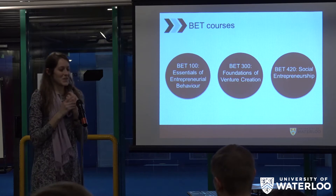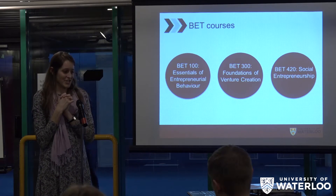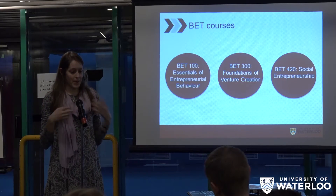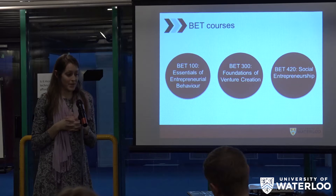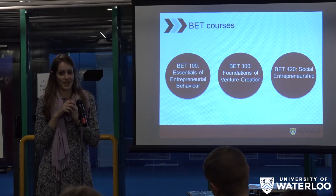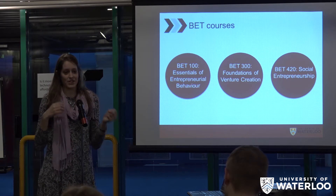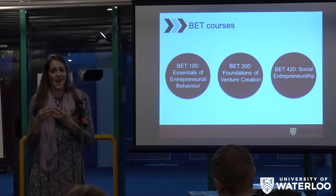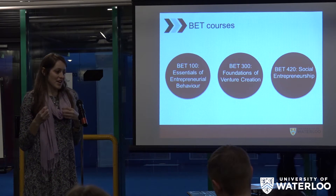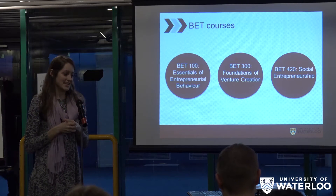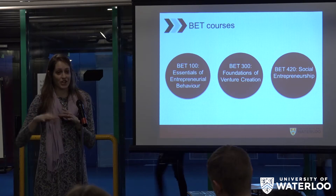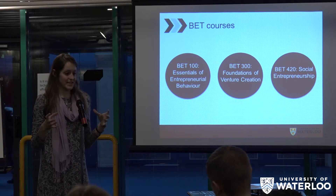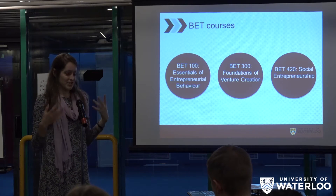For undergraduates, BET 100 is the jumping-off point, focusing on finding big problems and doing market research and validation for solutions with significant impact. BET 300, Foundations of Venture Creation, is a course where every person works on their own venture — doing value proposition, customer validation, and key early-stage pieces of preparing and launching a venture. BET 420, Social Entrepreneurship, surrounds different funding strategies for enterprises in the social space.